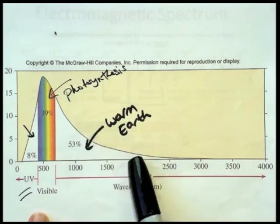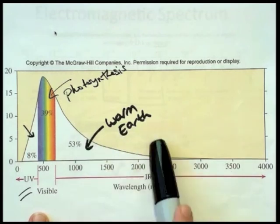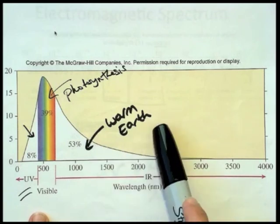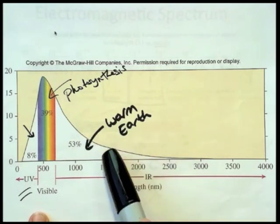53% of the radiation that gets to us from the sun is in the form of infrared radiation, and that's a good thing because infrared radiation serves to warm the Earth.